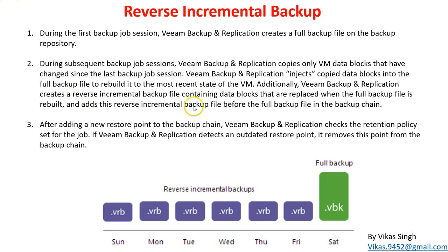In addition, Veeam creates a reverse incremental backup file containing the data blocks that are replaced when the full backup file is rebuilt. Every time a reverse backup job runs, it performs an incremental backup, checks all blocks that changed from the last backup, and injects those changes into the full backup. The reverse incremental backup file is then added to the full backup file in the backup chain.